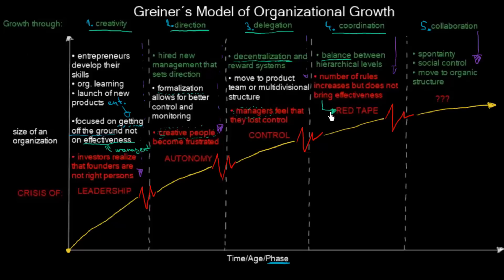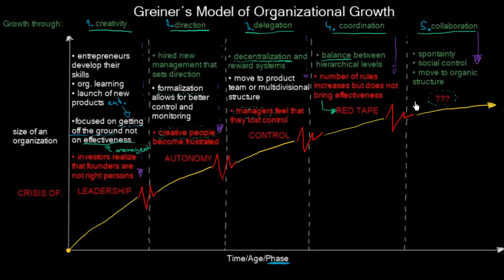Luckily, we can solve even this in the fifth phase, where we are growing through collaboration. Here, we try to encourage spontaneity and social control, and we are moving to the organic structure. However, the model ends here — it does not really describe what is going to happen or what kind of crisis will come after the fifth stage. That was the Greiner's model of organizational growth.